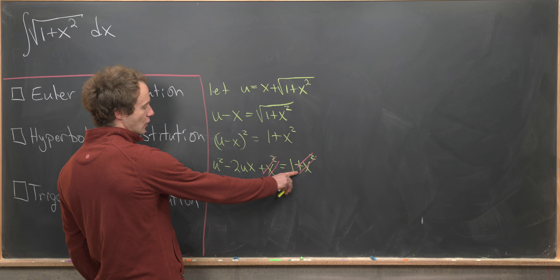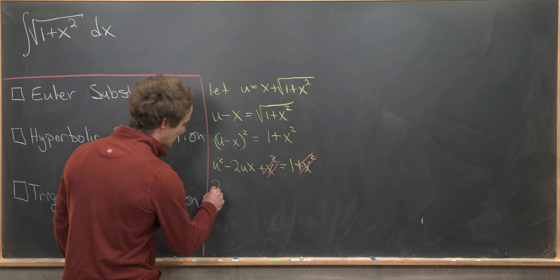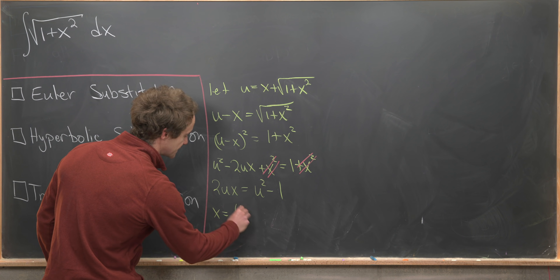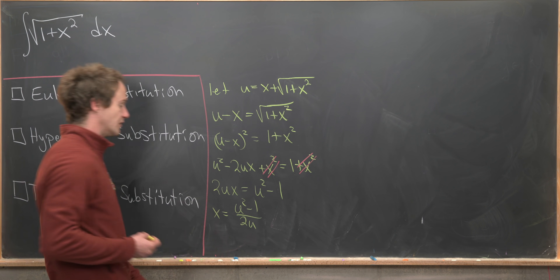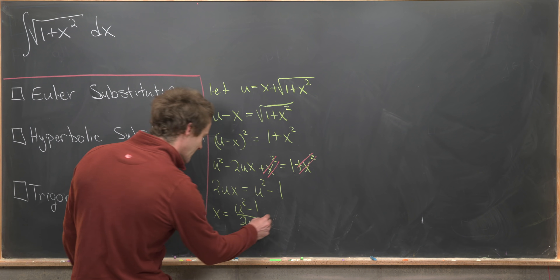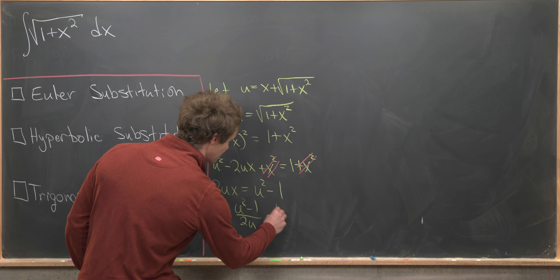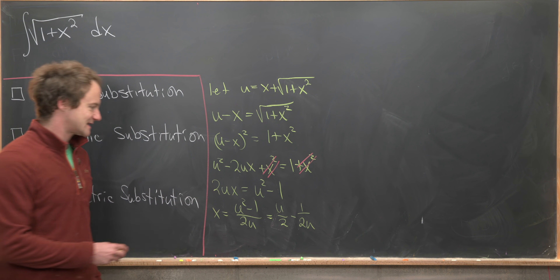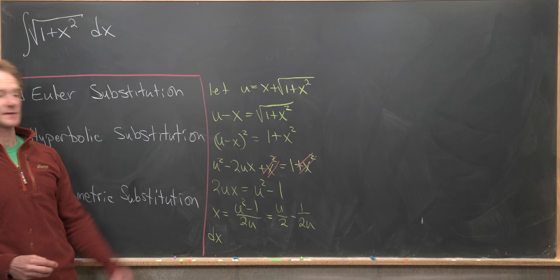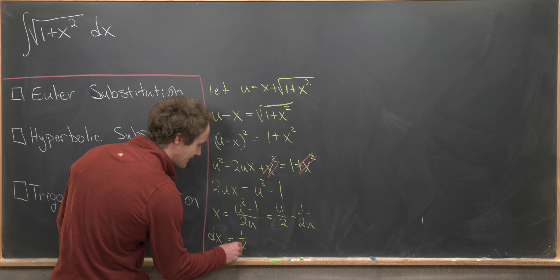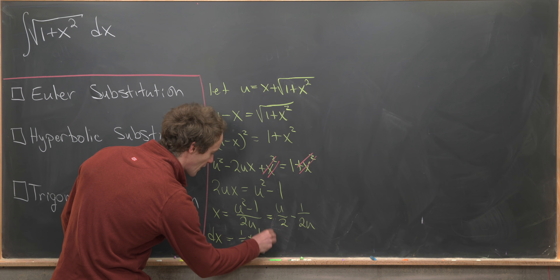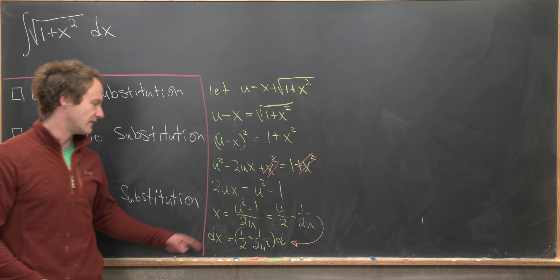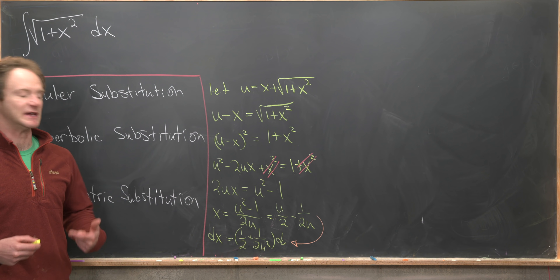Moving the 2ux term and the 1 over gives us 2ux equals u squared minus 1, which tells us x equals (u² − 1) over 2u. We can simplify this as u over 2 minus 1 over 2u. That allows us to calculate the dx component: dx equals one-half plus 1 over 2u squared, du, where we used the power rule treating the 1/u term as u to the minus 1.